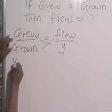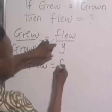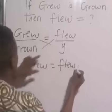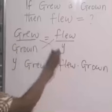Y times grew equals flew times grown. That is cross multiplication.